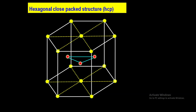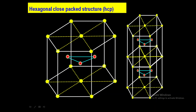If I want to calculate the coordination number for this structure, I place one more hexagonal unit cell at the top. This gives the arrangement of two hexagonal close-packed unit cells, one at the bottom and one at the top. To find the coordination number, I consider a central atom. It is surrounded by six neighboring atoms in the hexagonal layer.